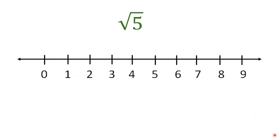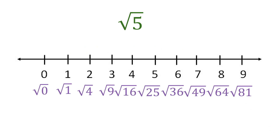Going to the number line — we don't include the negative side since we won't be squaring negative numbers here, so we'll just go to the positive numbers. The best thing to do first is to label the equivalent square roots at each whole number position. Square root of 0 is 0, square root of 1 is 1, and square root of 4 is 2 because 2 times 2 is 4.